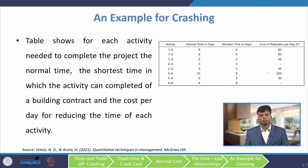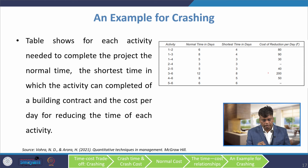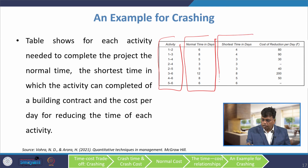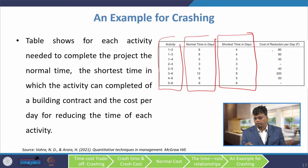I have taken a sample problem from ORA Quantitative Techniques in Management. The table shows for each activity: the normal time, the shortest time (crash time), and the cost per day for reducing the time of each activity. For example, activity 1-2 has a normal time of 6 days and can be crashed to 4 days, with a per-day cost increase of 80 rupees. In this problem, the slope for each activity is given directly.